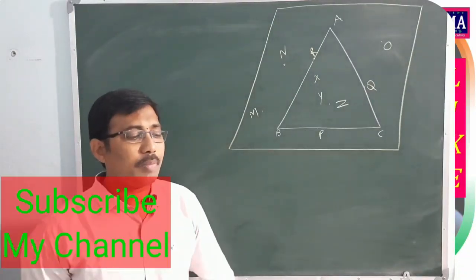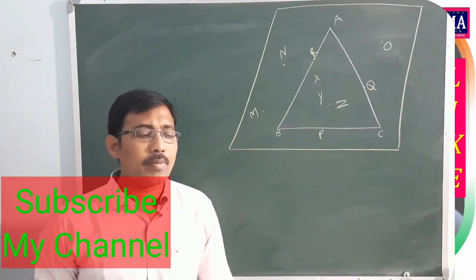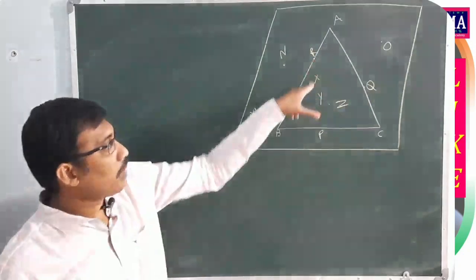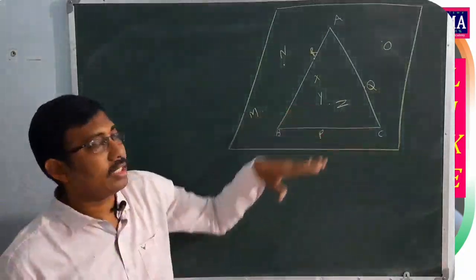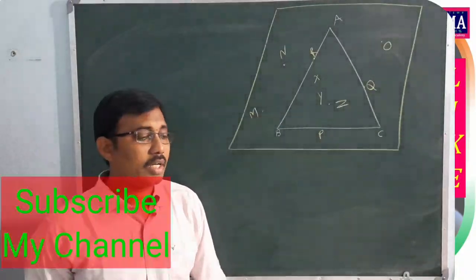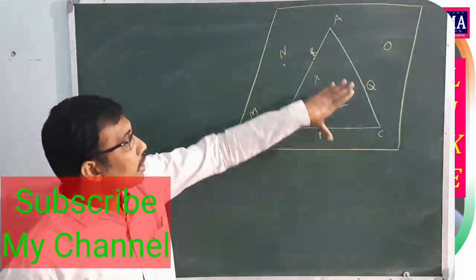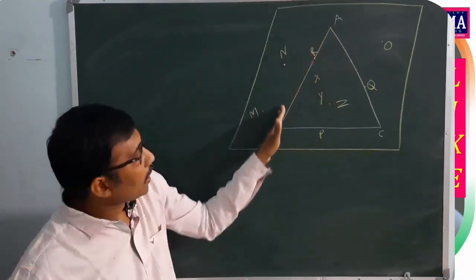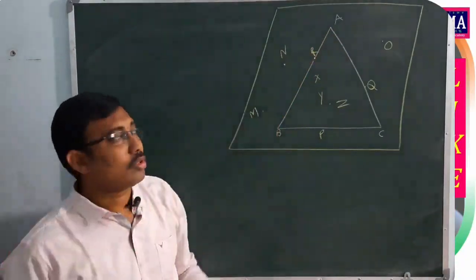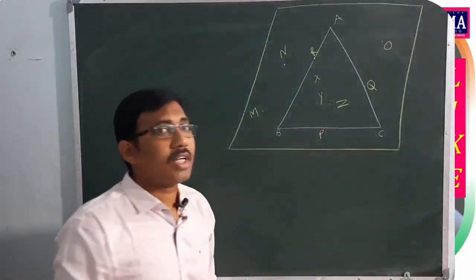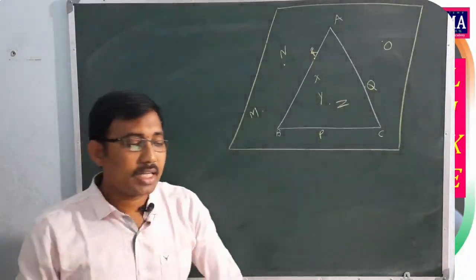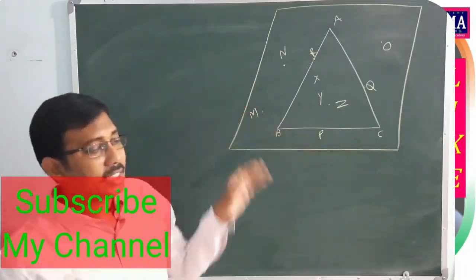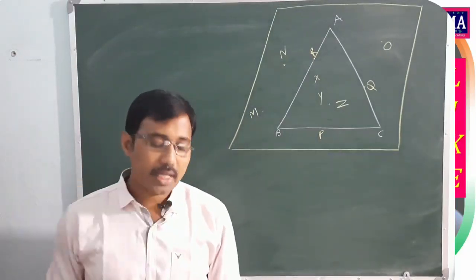The part of the plane enclosed by triangle ABC is called the interior of ABC. The interior together with the triangle's boundary (the sides) is called the region of the triangle. The third part — outside the triangle — is the exterior of the triangle.